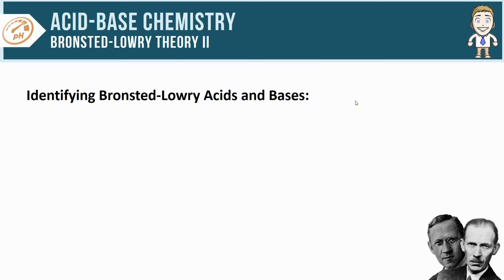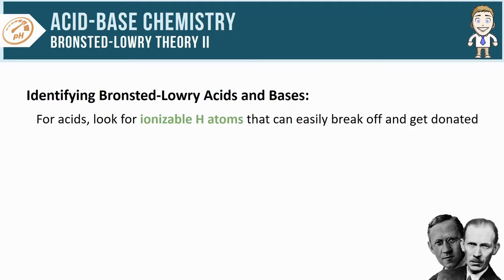Identifying acids is pretty simple. They're going to look a whole lot like you expect an acid to look. So you just want to spot those ionizable hydrogen atoms that can easily break off and get donated, and if you're looking at a chemical formula these acids look just like you would expect.